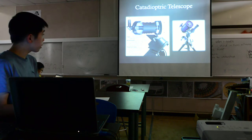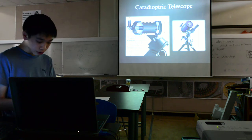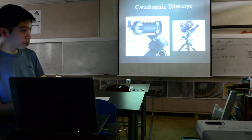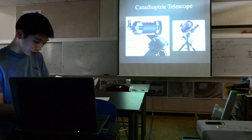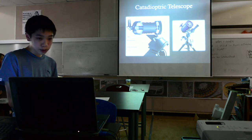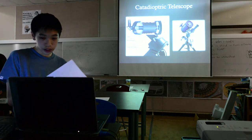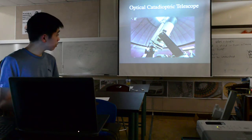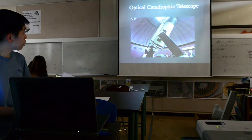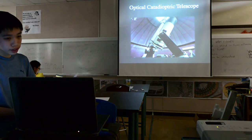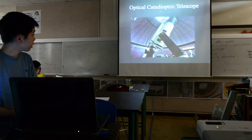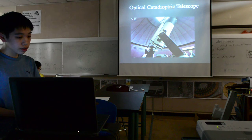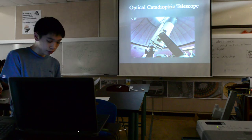The disadvantages of the catadioptric telescope are that because it utilizes mirrors, it also has some light loss. It is also the most expensive of the three optical telescopes. This is one of the catadioptric telescopes located in an observatory in Vancouver — so it's not just small telescopes; there are also large observatories.